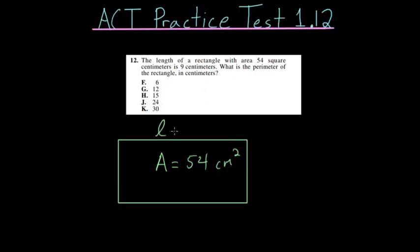Let's call this side the length and say it's 9 centimeters. Now we just have to figure out the width so that we can then figure out the perimeter. To figure out what the width is, we need to know the area formula for a rectangle. In general, the area of a rectangle is always just the length times the width.